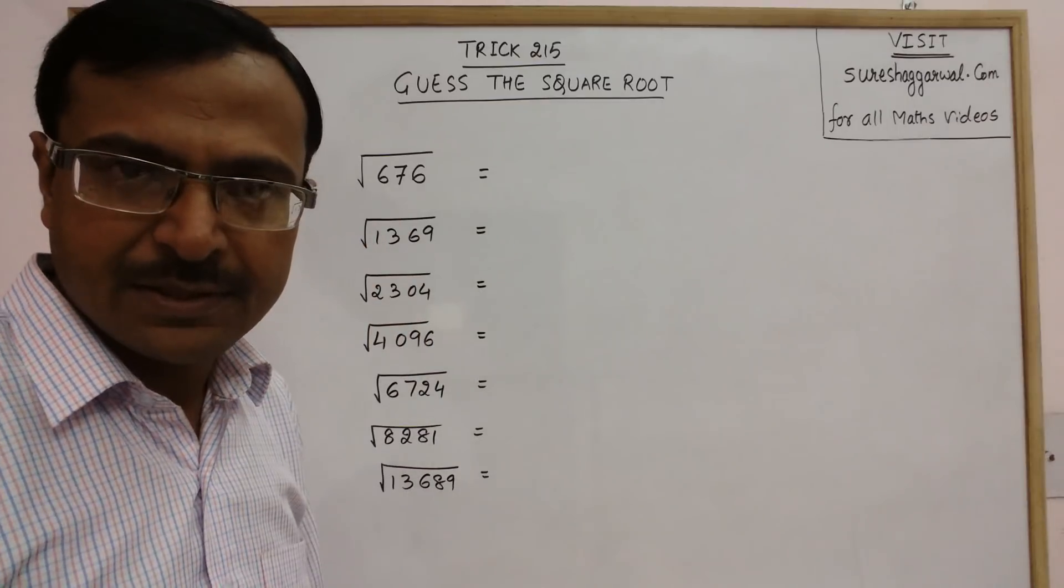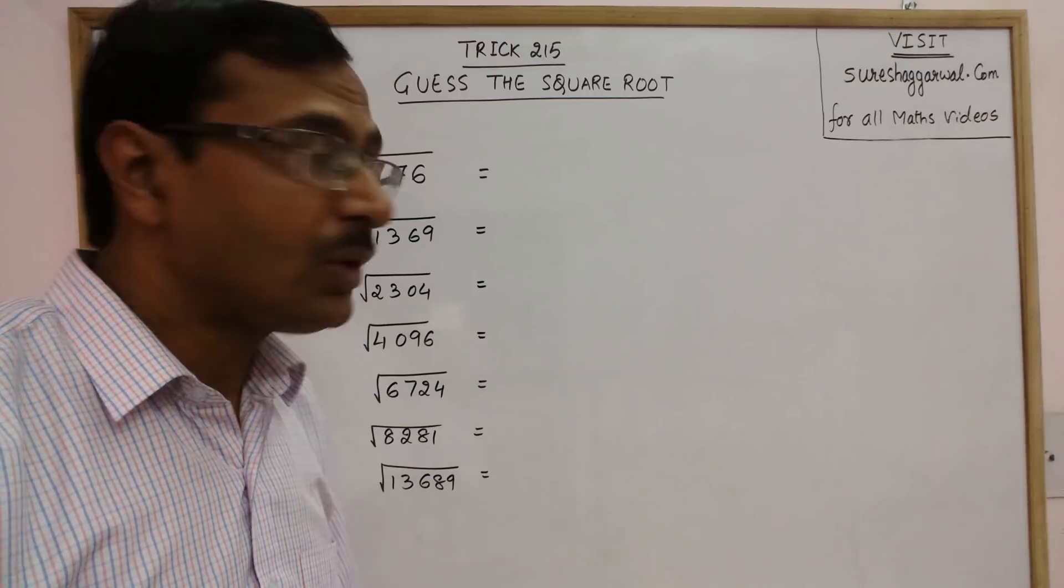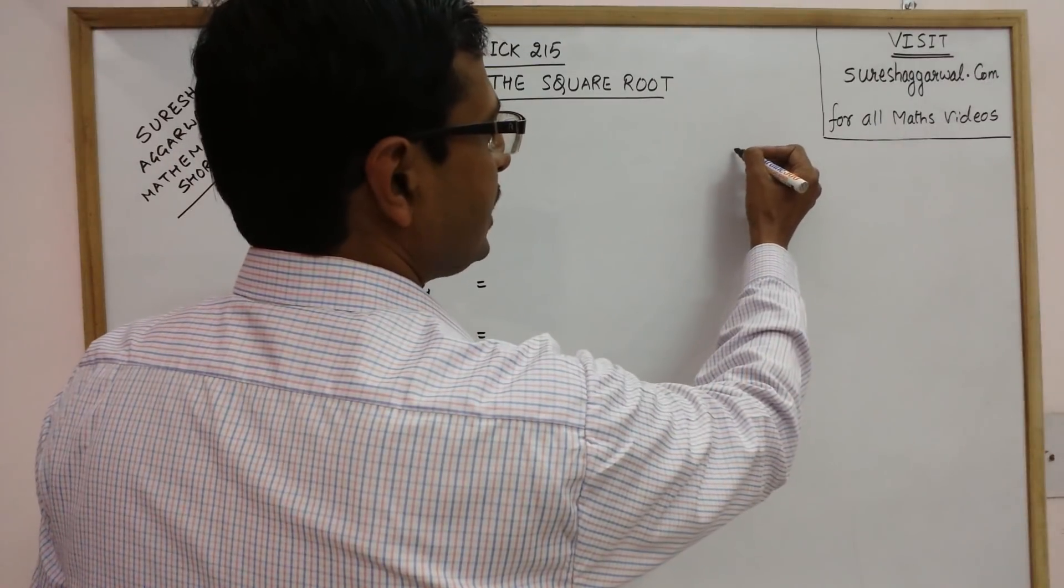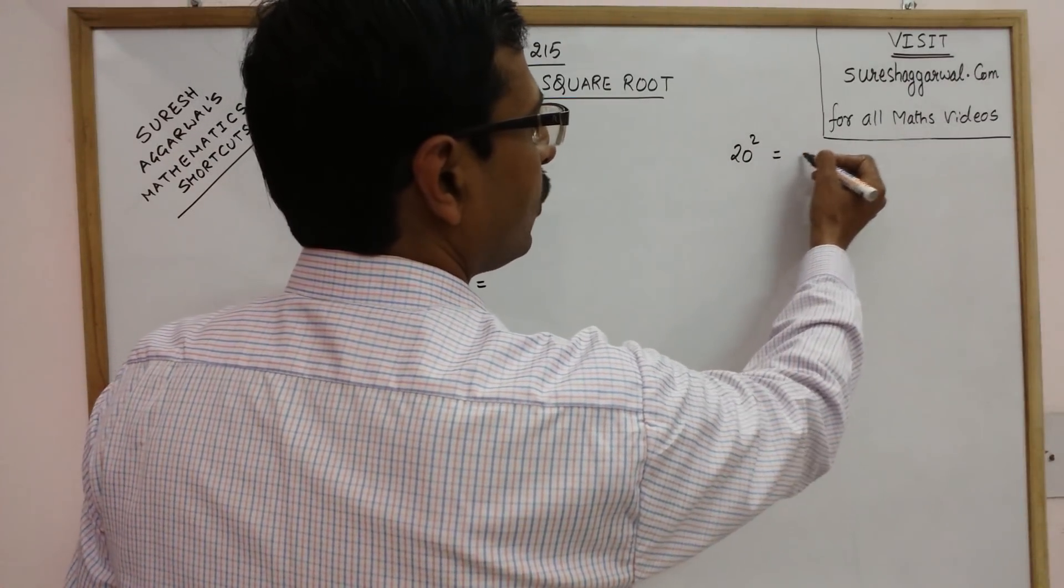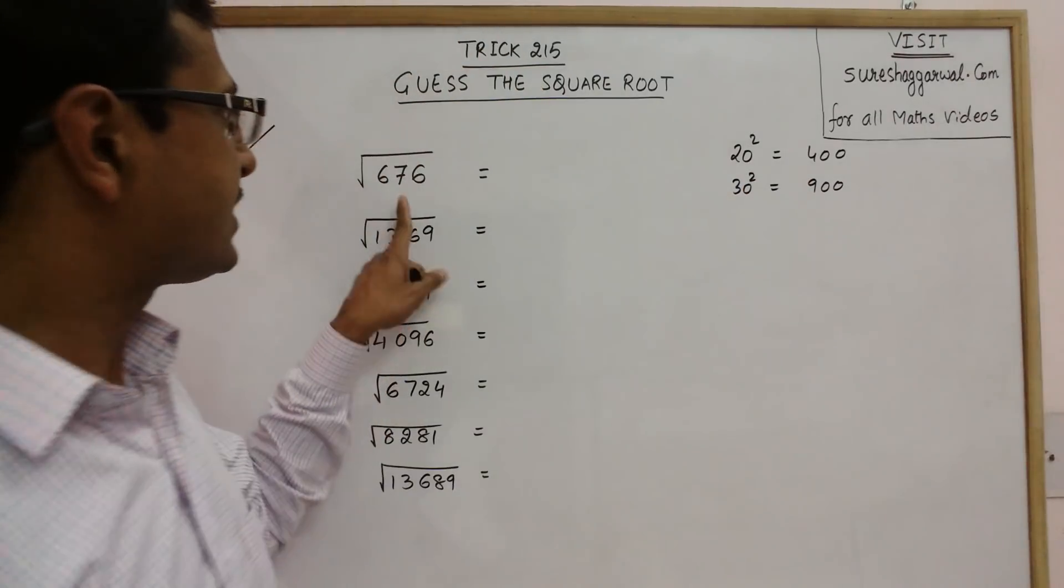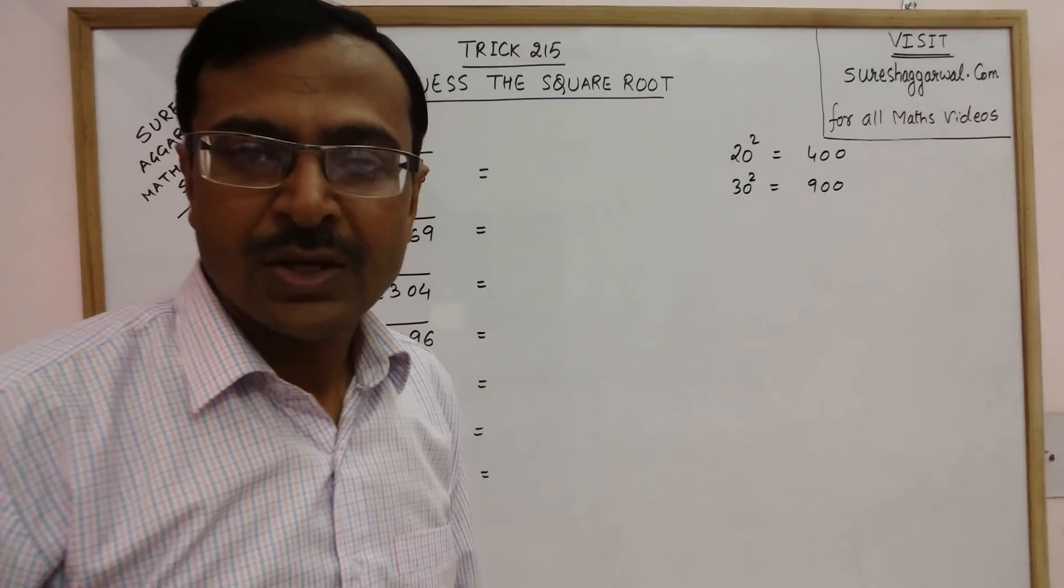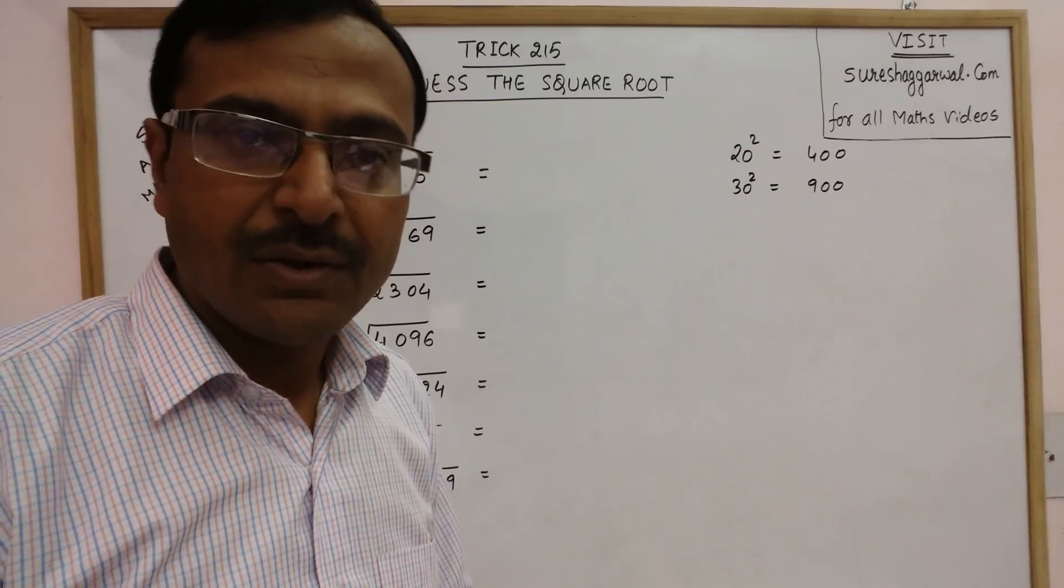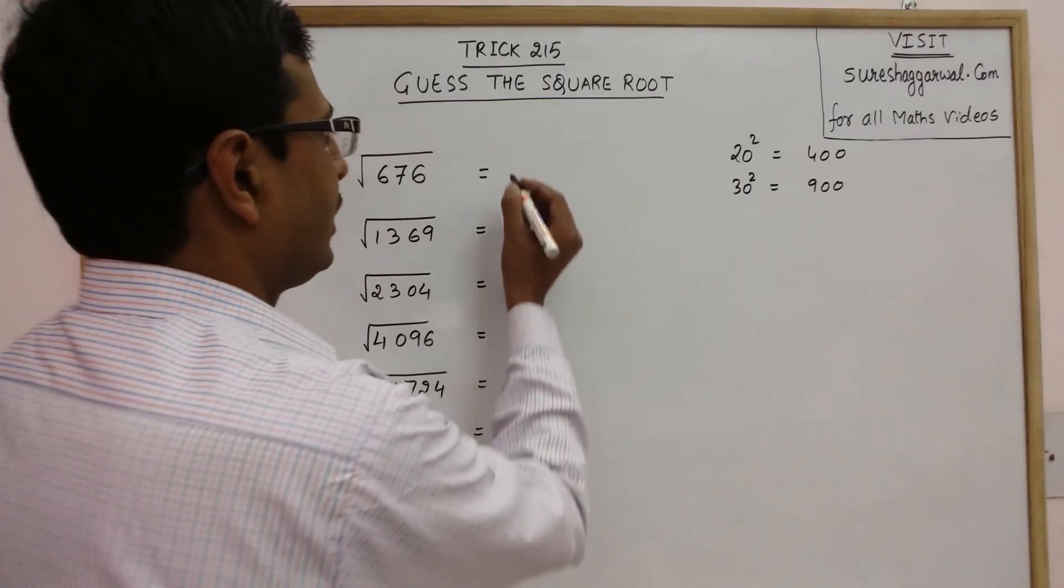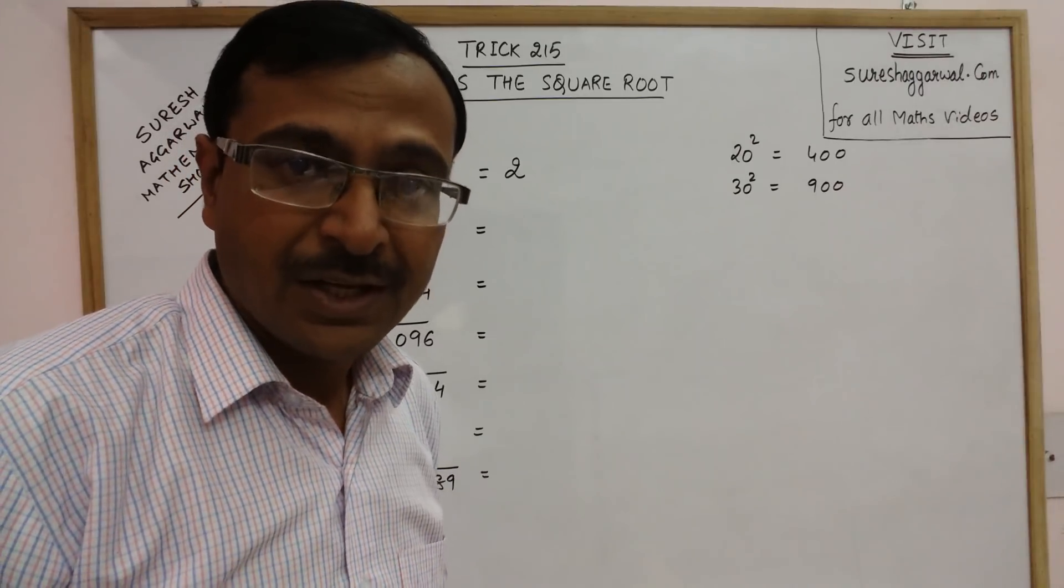Now see 676, just guess the two round figures between which this number lies. See 20 square is 400 and 30 square is 900. Now our number 676 lies between 20 square and 30 square. So obviously our answer will lie between 20 and 30. So our answer is 2 followed by one more digit.